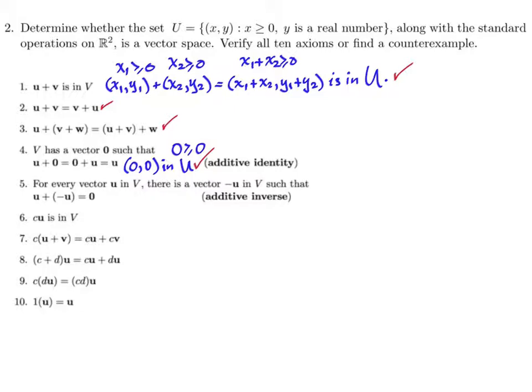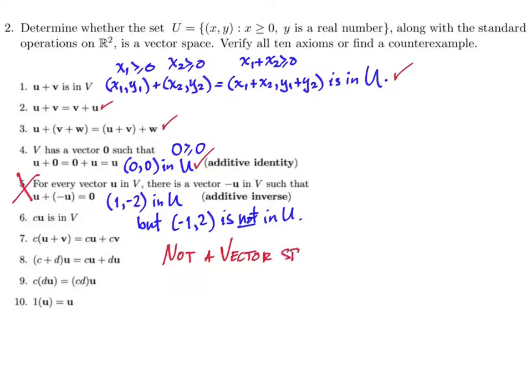What about number five? Does it contain an additive inverse for every single vector in the set? Well, that's the one that might cause some issues because in this set, all the ordered pairs have first component greater than or equal to zero. So let's pick one. Let's pick a specific one, the ordered pair (1, -2). That's in there. That's in our set. Does it have an additive inverse also in this set? Well, we know in R², the additive inverse is (-1, 2), but that's not in U because the first component is negative. So right away, we've bumped into an axiom that fails. Now we don't have to go any further. We have just found an axiom that does not hold. And so we can conclude that this set is not a vector space. We don't have to go any further.